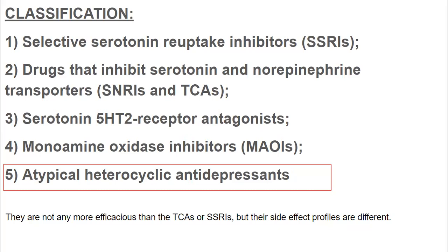As I said before, the hero antidepressant, the favorite of all, is SSRIs. As you go further down, all of them start to become the second choice of drug. When we talk about atypical heterocyclic antidepressants, they are not any more efficacious than the TCAs or SSRIs, but their side effect profiles are different.